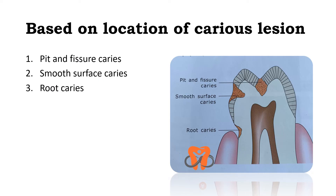The next classification is based on the location of the caries lesion. We have pit and fissure caries — caries present in the pits and fissures of the teeth. We have smooth surface caries — present on the proximal surfaces. And we have root caries — caries on the root surface, which appears as caries on the root surface.